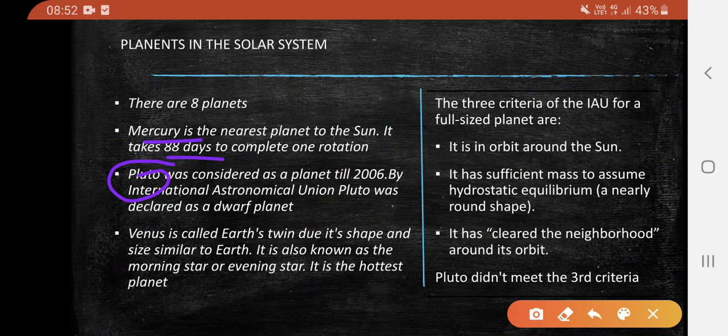Pluto was considered a planet until 2006. There are 3 criteria given by the International Astronomical Union for a full-sized planet.